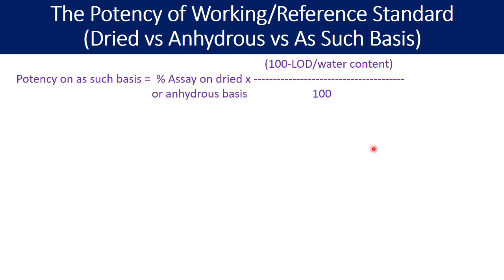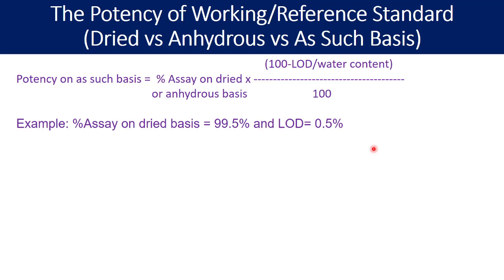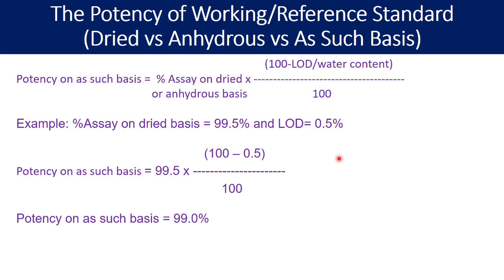Taking an example: if the percent assay on dried basis is 99.5% and the loss on drying is 0.5%, substituting the values into the formula gives a potency on an as-such basis of 99.0%.